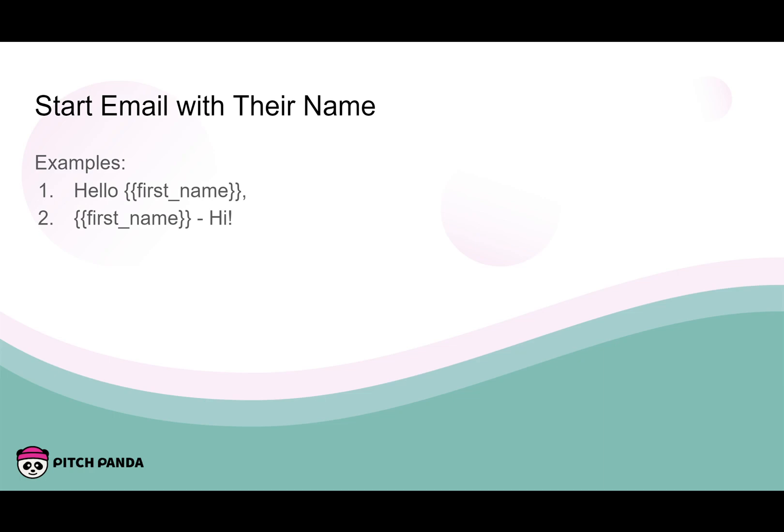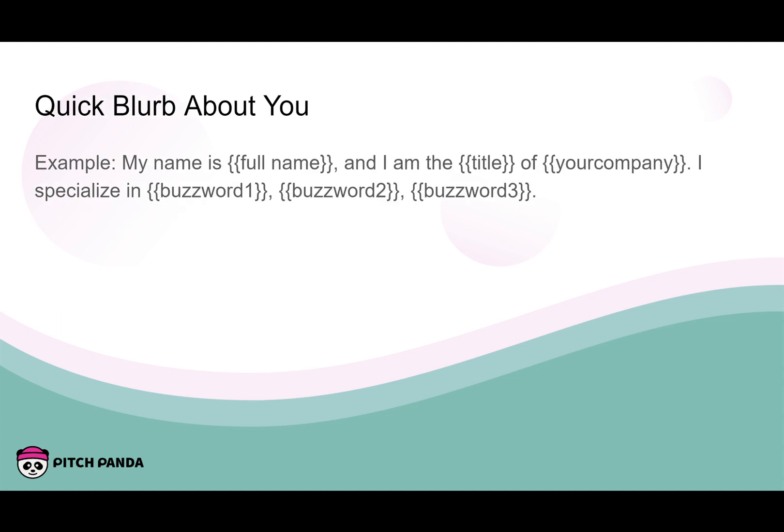Start the email with 'Hello, [first name],' or change it up — Hi, Hey, or greet them with something that shows enthusiasm. Then: 'My name is [your full name] and I am the founder of Pitch Panda, and I specialize in buzzword one, buzzword two, buzzword three.' When someone's giving me a guest post pitch, they only write about certain things. If in your first line you mention you're an expert on the exact things they write about, that is a bonus for you. You can automate this whole thing with AI.